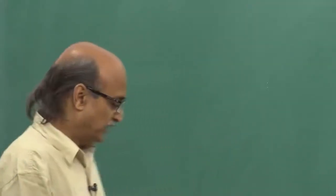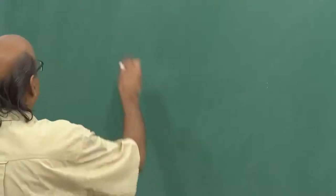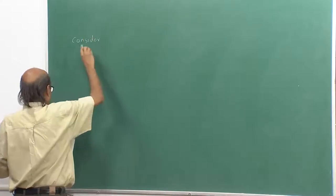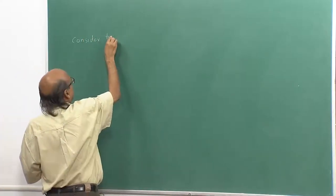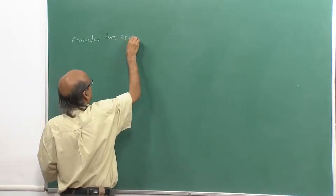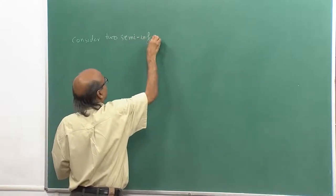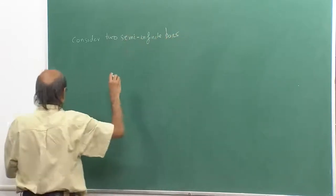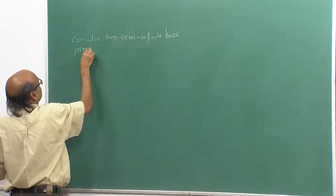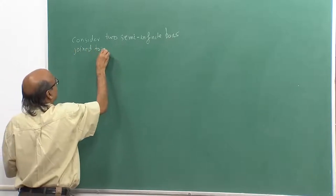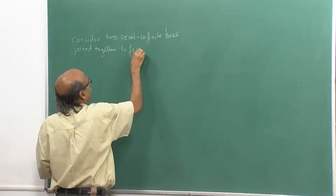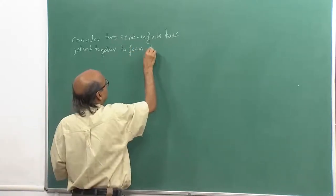Continuing with our solutions to Fick's second law, let us consider the following case. Consider two semi-infinite bars joined together to form what is called a diffusion couple.